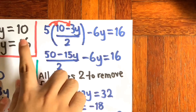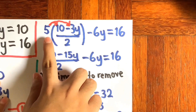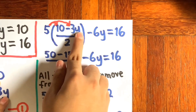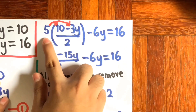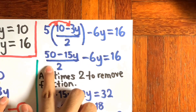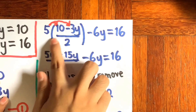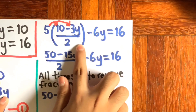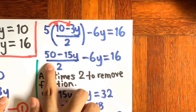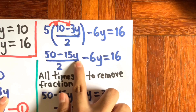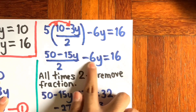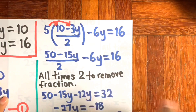So first, what you want to do is multiply this 5 with 10 and 3. So 5 multiplied by 10 gives you 50, and 5 multiplied by 3 gives you 15. So you're going to end up with 50 minus 15y, divided by 2, minus 6y equals to 16.